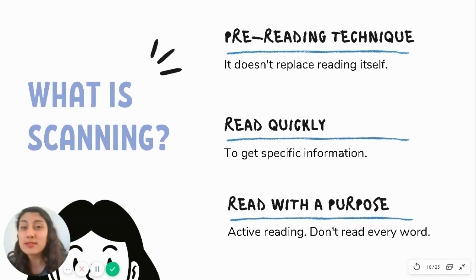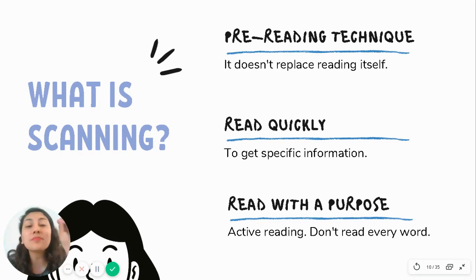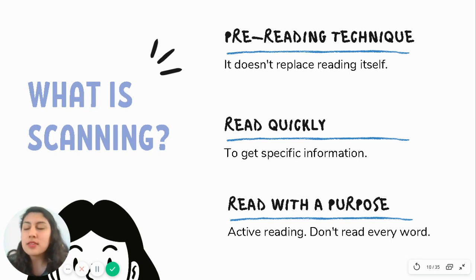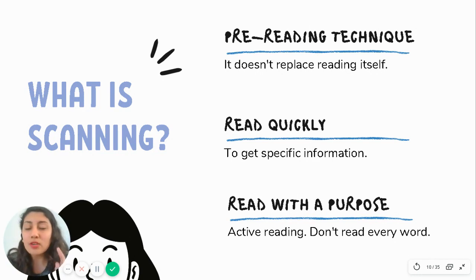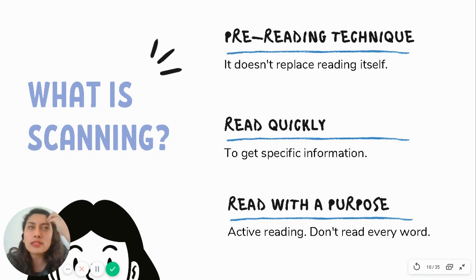This is different from skimming — in skimming you needed to get the gist, the big picture. In scanning, we look for specific information within the text. You also need to read with a purpose — this is very important. Because this is active reading, not lazy reading. You need to be very focused. Not reading every single word doesn't mean you're paying only half attention; it means you're reading with a purpose, actively and concentrated, searching for the specific information you need.